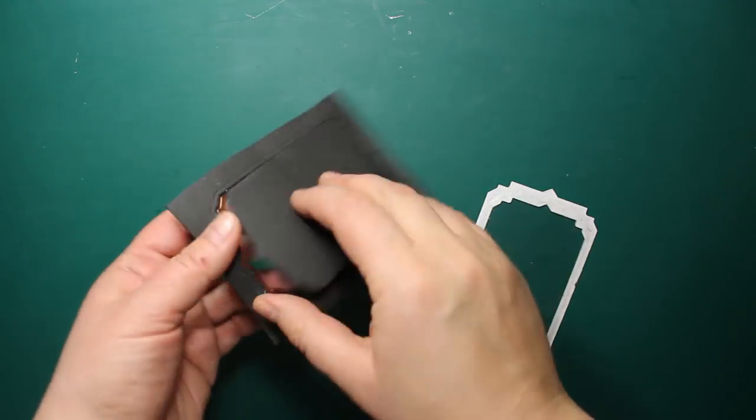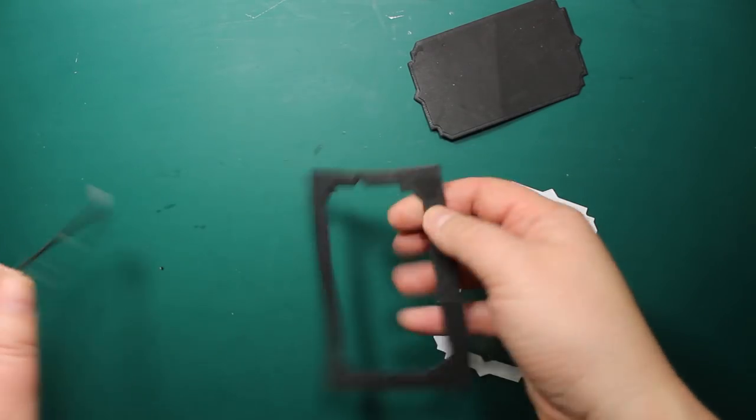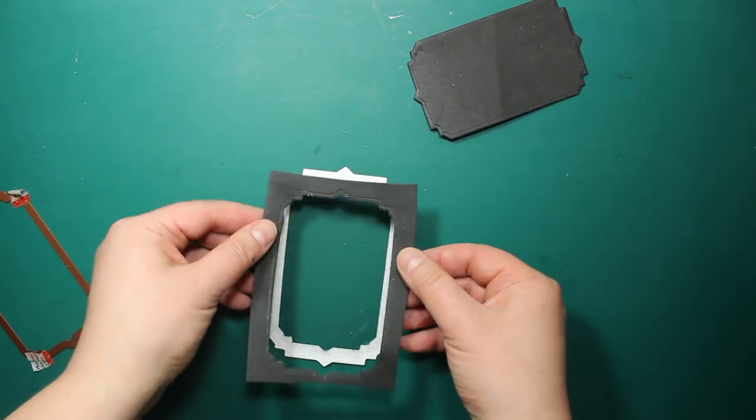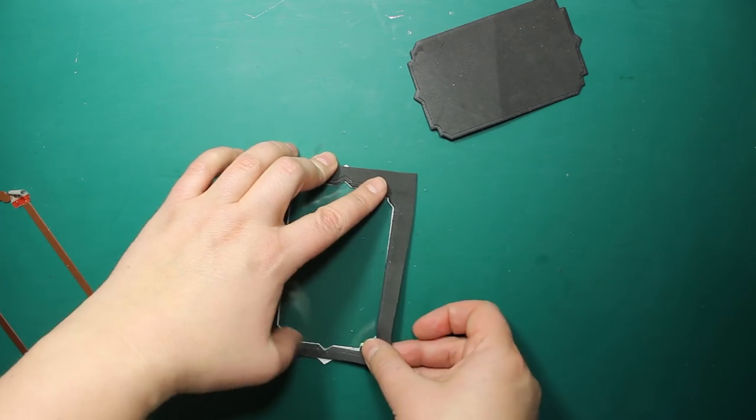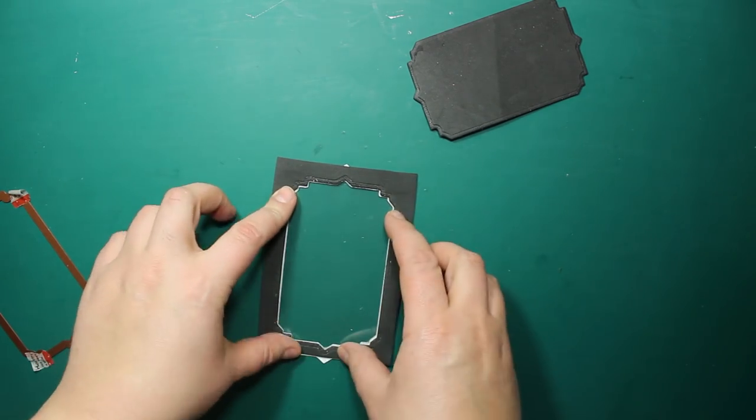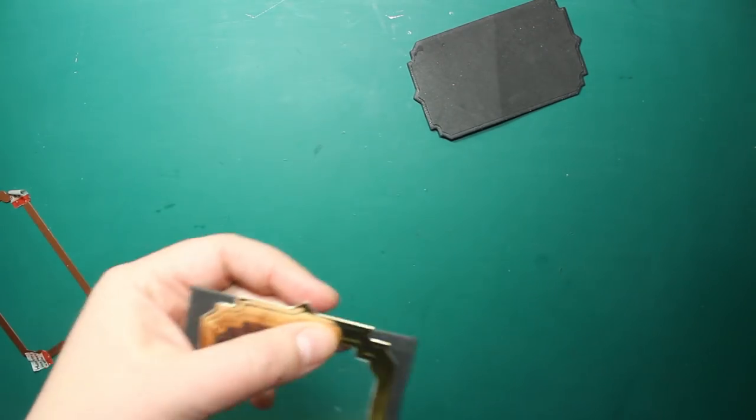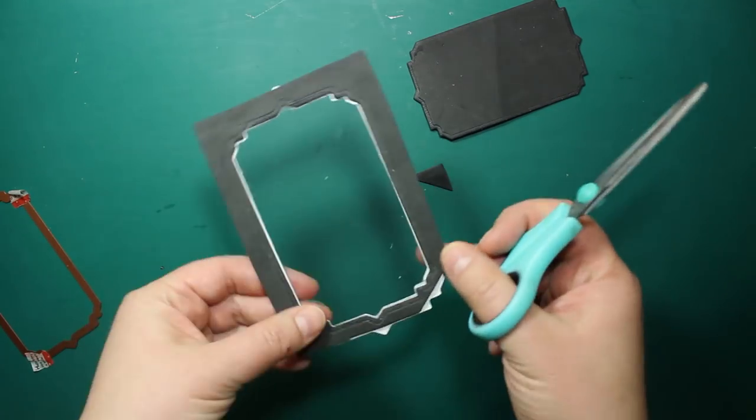When it's done, I'm applying more adhesive on top to stick some foam onto it. I'm using 2mm black craft foam, which is about the thickness of foam squares. I'm just pressing it down slightly and then trimming off the excess.